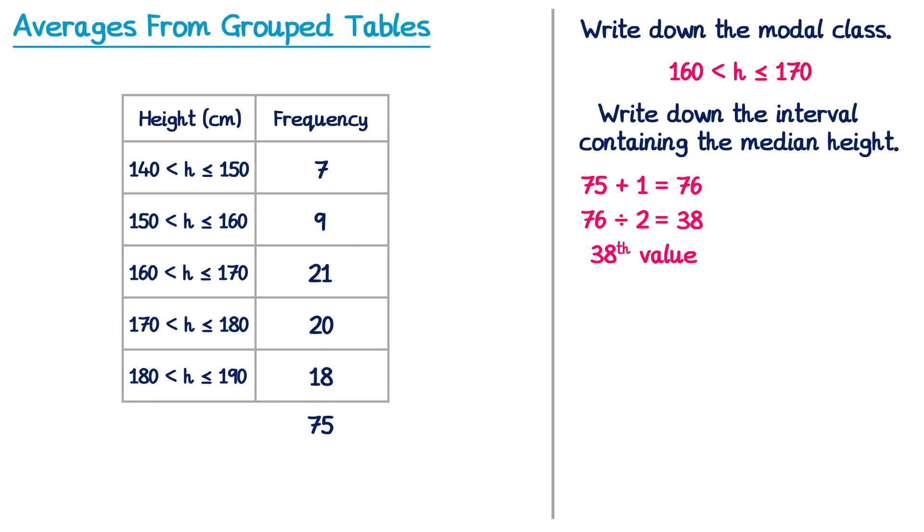So if you imagined lining up all of these people from the shortest person to the tallest person, the person that stood in position number 38 will be the person that's in the middle and therefore the median. But which group would this person be in? Well to work that out we look down this frequency column here and we count down until we hit the 38th value.